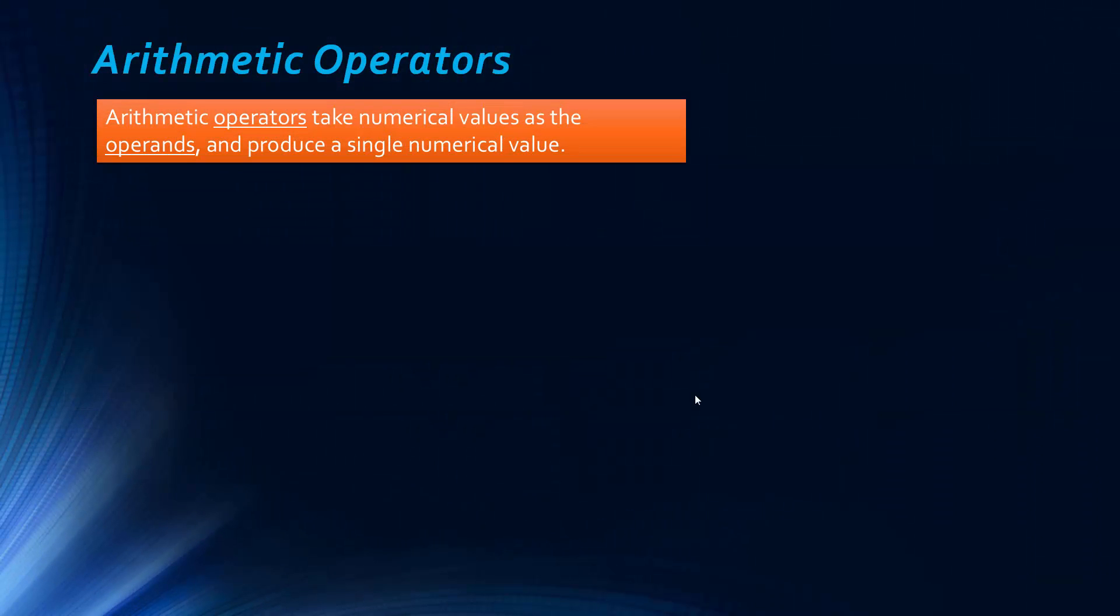So arithmetic operators take numerical values and produce a single numerical value. So it's dealing with numbers. So 5 plus 10, this expression, the operator is the addition symbol, and it's telling us what we're doing.